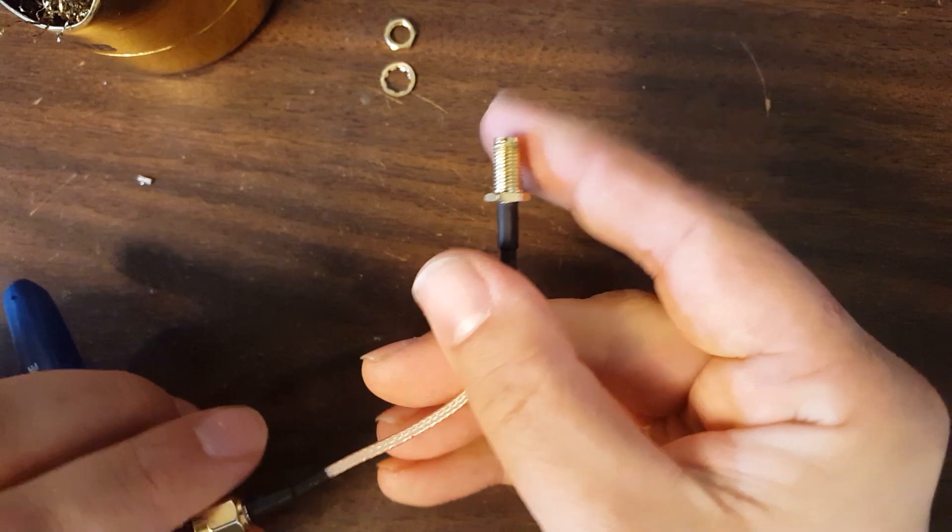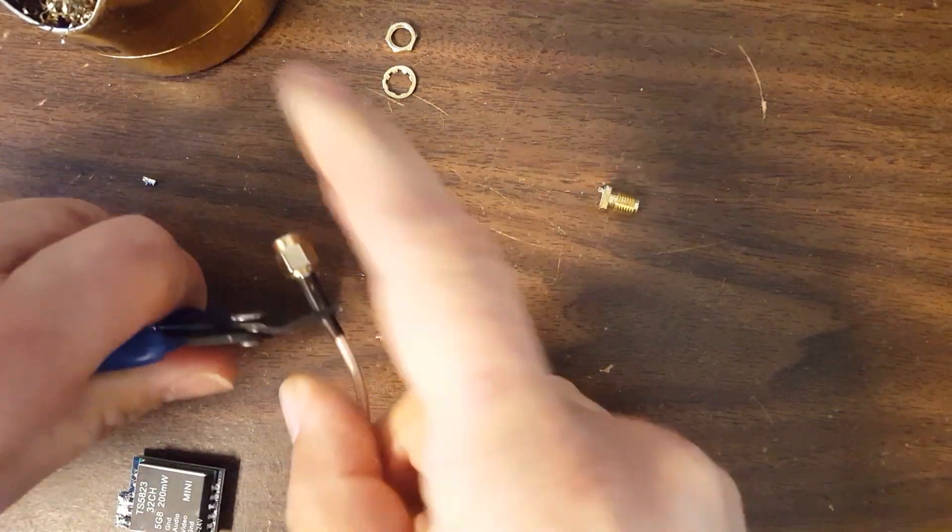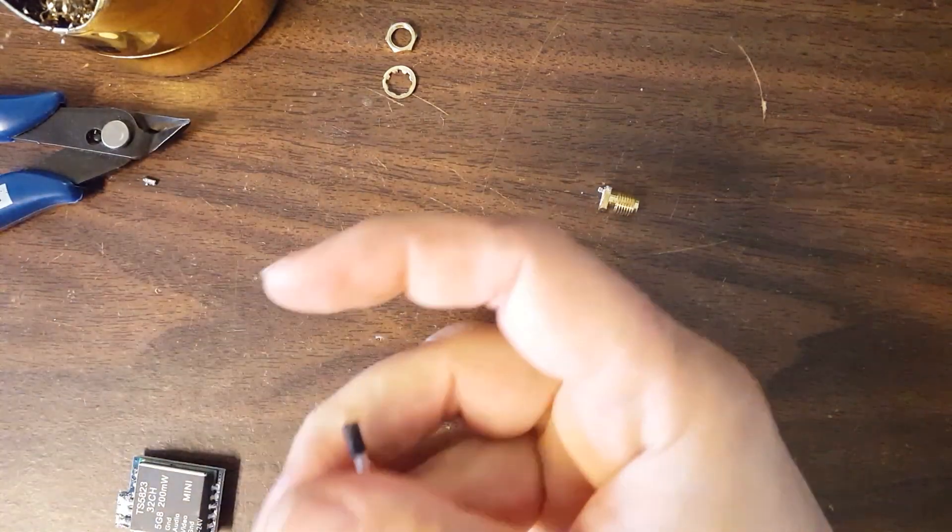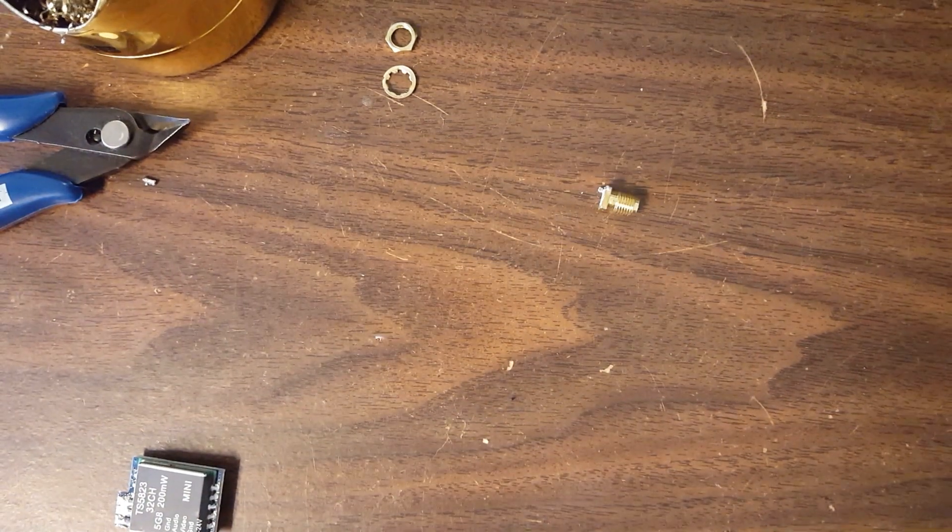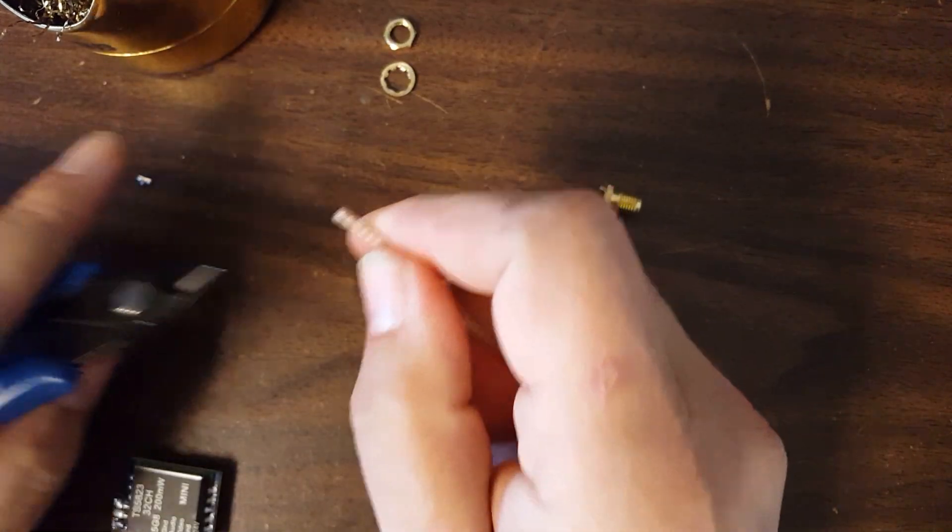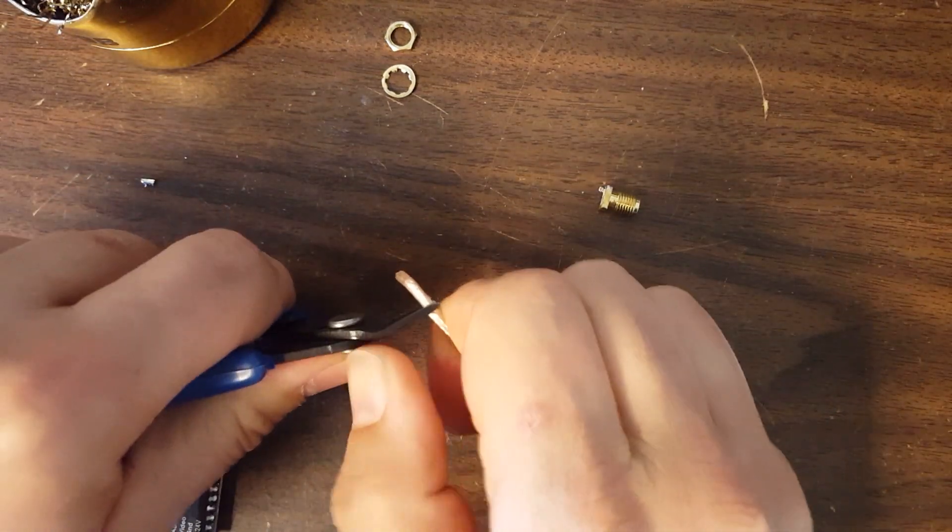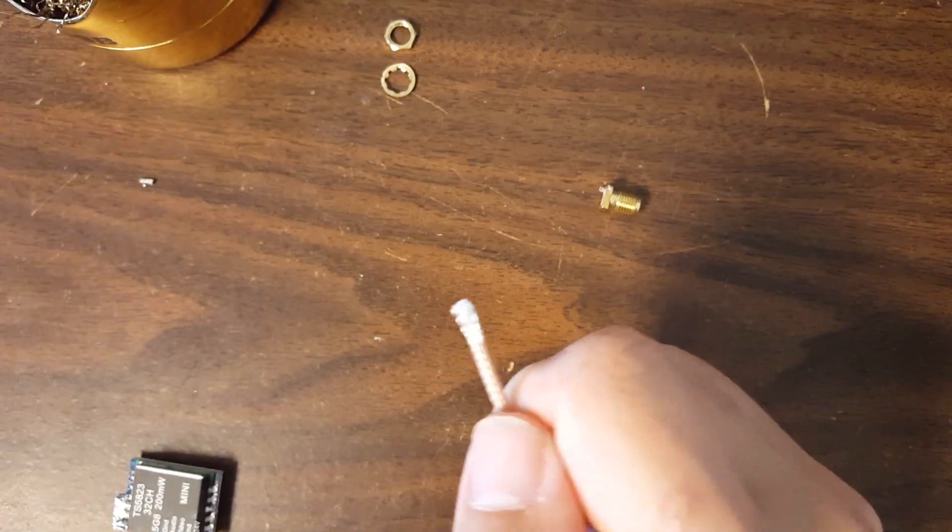So we're going to snip off, let's make sure we snip off the right end. This is the bulkhead. So that's where our antenna is going to go. This is the end we're going to snip off. And I'm going to very carefully strip just the outer sheath. I don't want to cut the inner braid. There we go. Perfect.